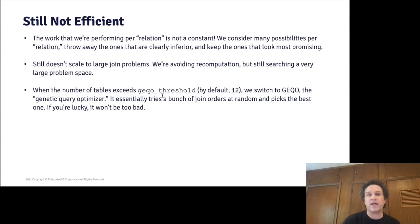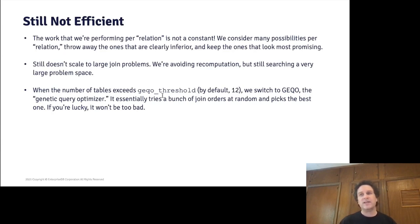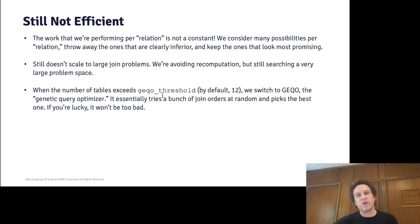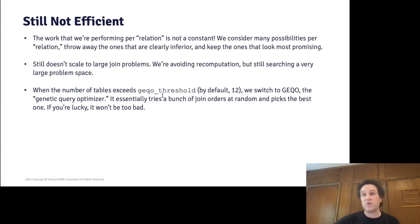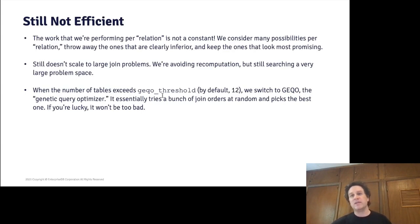At some point the algorithm breaks down, and there's a parameter called geqo_threshold that controls when we switch to an alternative algorithm. The default is 12, which I think is kind of low — in almost all cases you can go considerably higher. But at some point it's just going to get too slow to do planning the regular way. So we switch to something called the genetic query optimizer. The genetic component doesn't really work — basically it tries a bunch of join orders at random and picks the best one. It will consider all possible join strategies for each selected join order, but only a very tiny number of possible join orders. In some query shapes you're likely to hit a good one by chance; in others there may be only a few good join orders and you may not get one.